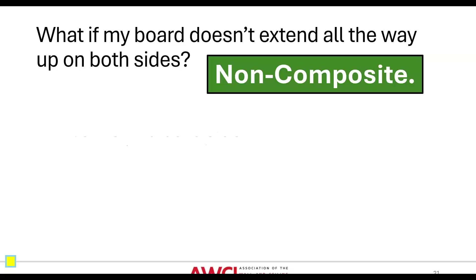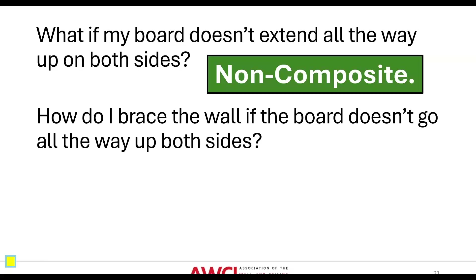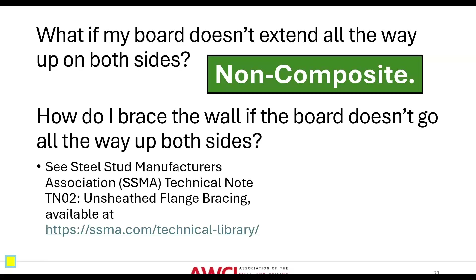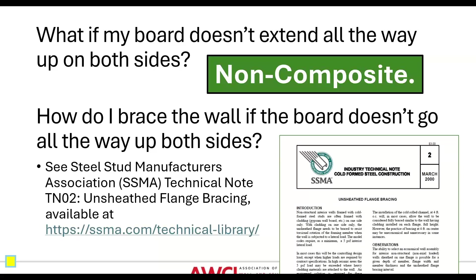What if your board doesn't extend all the way up on both sides? That's non-composite. How do you brace the wall if the board doesn't go all the way up? The Steel Stud Manufacturers Association SSMA has Technical Note TN-02, Unsheathed Flange Bracing — available as part of the handouts or at ssma.com/technical-library. It discusses cold rolled channel through the punch-outs as one way to brace a stud where you don't have board all the way up on both sides.